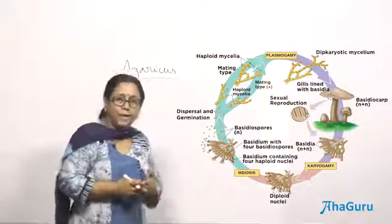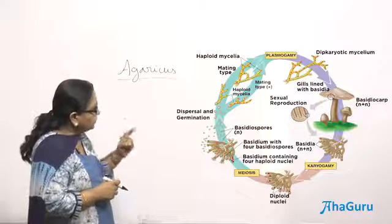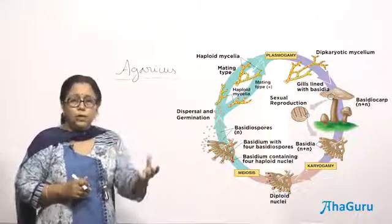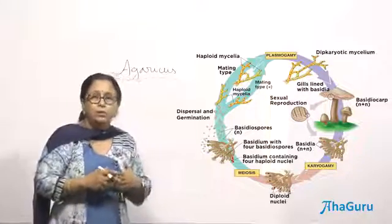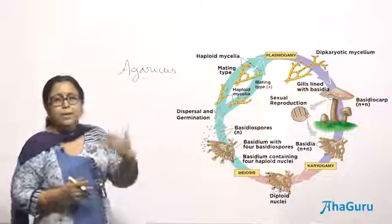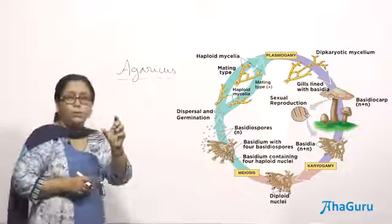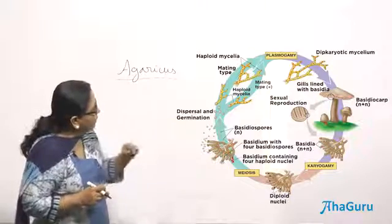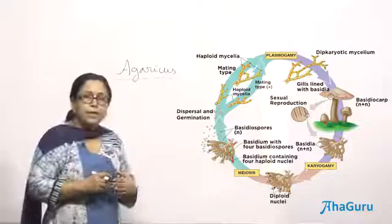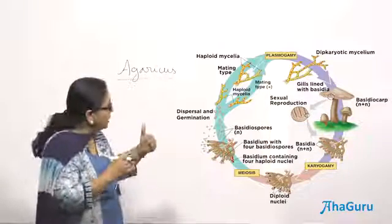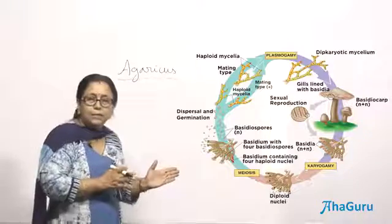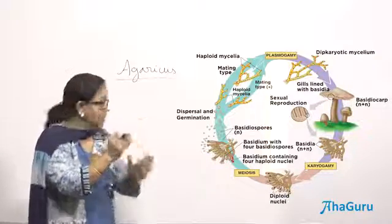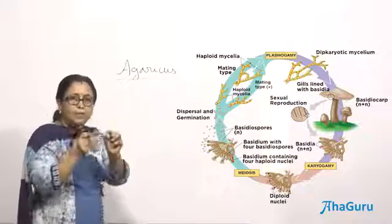Basidiomycetes also have septate hyphae. They produce something called the Basidiospore, which is the sexual spore. Basidiomycetes reproduce mainly by sexual reproduction; very few show asexual reproduction. The Basidiospores, when they germinate, produce primary mycelium. The primary mycelium is monokaryotic. Two primary mycelia then combine to form secondary mycelium — only plasmogamy happens, no karyogamy. The cytoplasm unites but the nuclei remain separate.